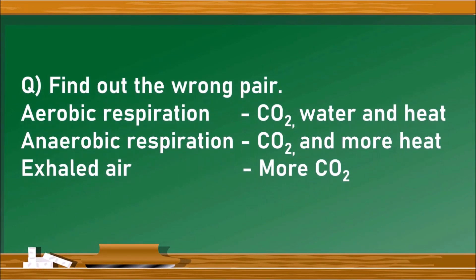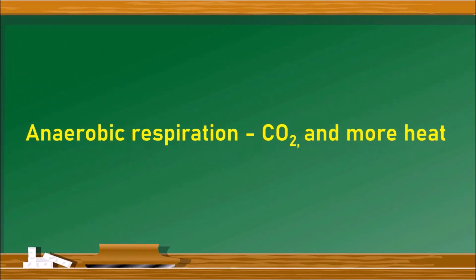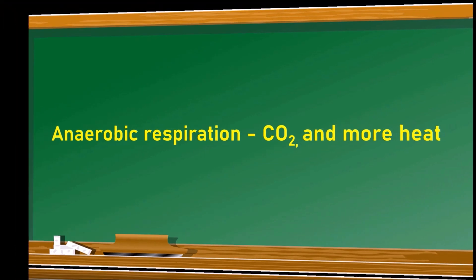Find the wrong pair from these three: aerobic respiration → carbon dioxide, water, and heat; anaerobic respiration → carbon dioxide and more heat; exhaled air → more carbon dioxide. The wrong pair is anaerobic respiration → carbon dioxide and more heat, because although carbon dioxide is released in anaerobic respiration, very little or less heat is released compared to aerobic respiration.